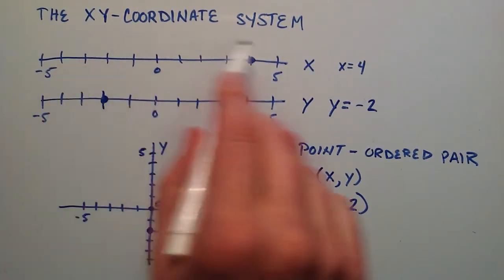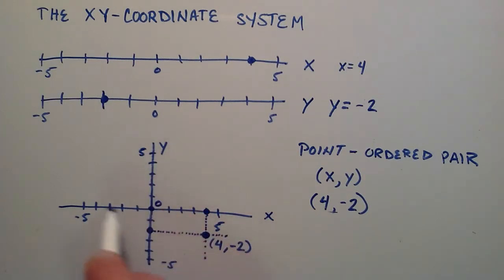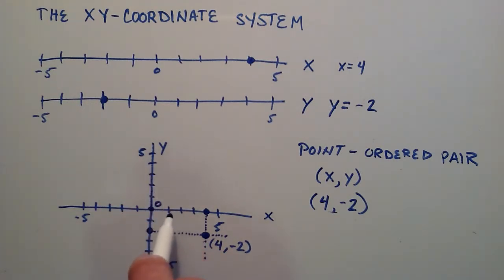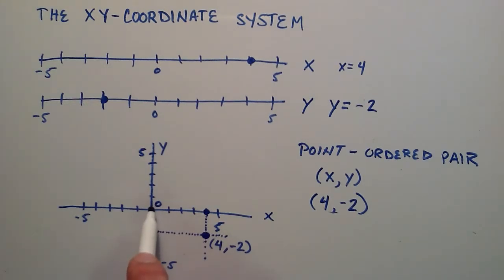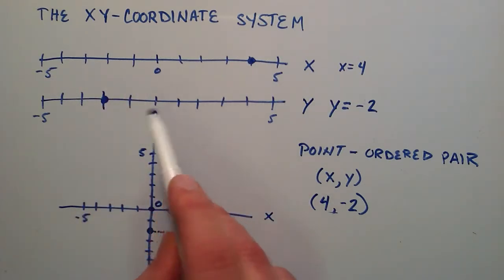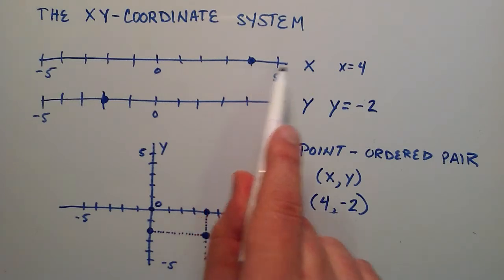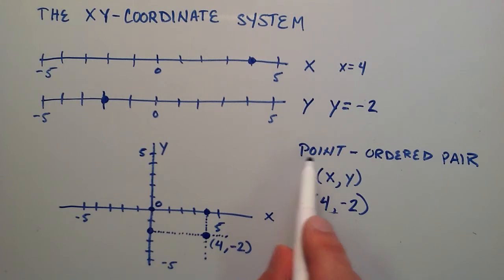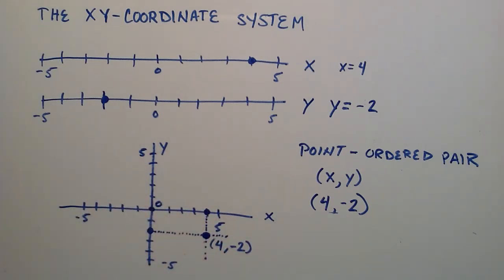That was an introduction to the x-y coordinate system — basically a combination of two number lines, where the x axis is horizontal and the y axis is vertical, perpendicular to each other. Where they cross is the point (0, 0), the origin. On a number line you only need one value to plot a point, but on the x-y coordinate system you need two values: the x and y component. Thank you for watching — let me know what you think in the comments, have an excellent day, and don't forget to subscribe.